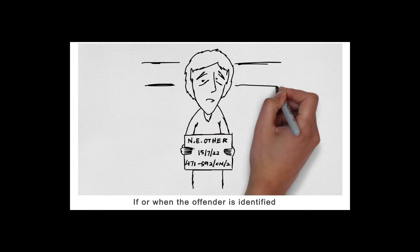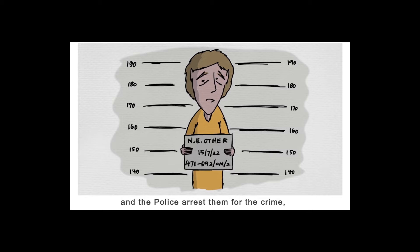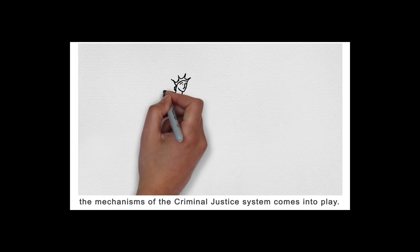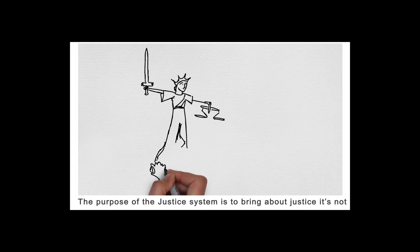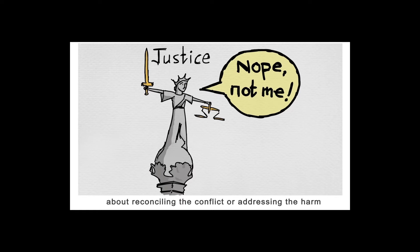If or when the offender is identified and the police arrest them for the crime, the mechanisms of the criminal justice system come into play. The purpose of the justice system is to bring about justice. It's not about reconciling the conflict or addressing the harm that exists between the victim and the offender.